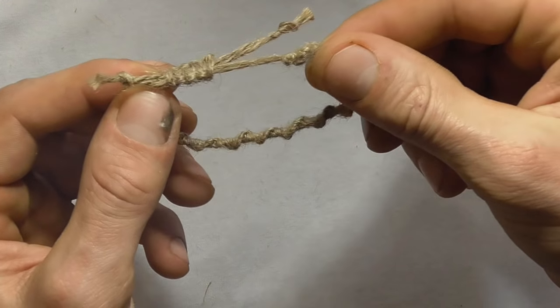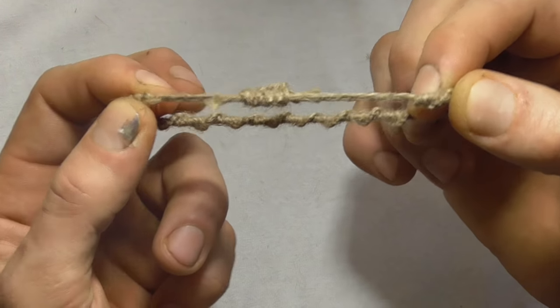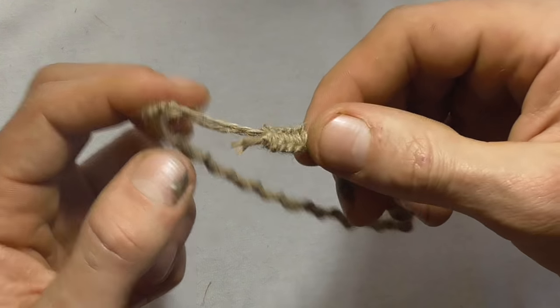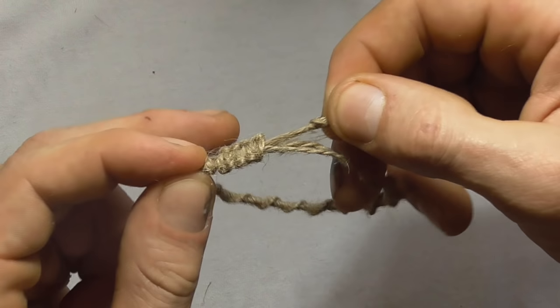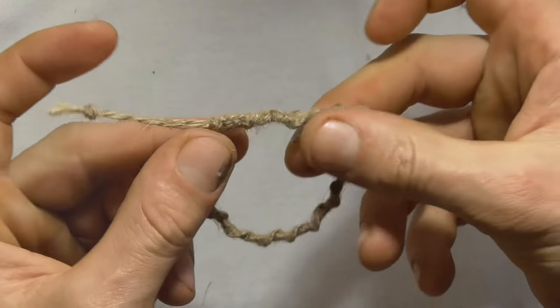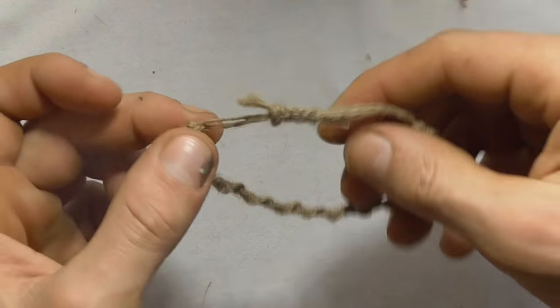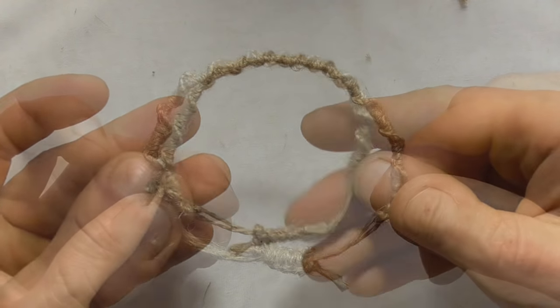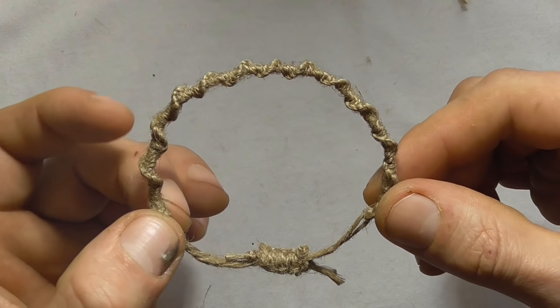Once you've tied overhand knots on the ends here, you should be able to slide your bracelet apart all the way like that, and then pull these ends to tighten it up. That should be your finished bracelet.